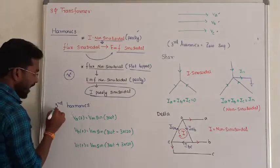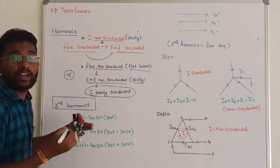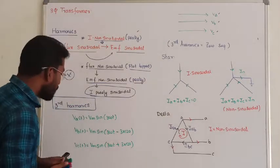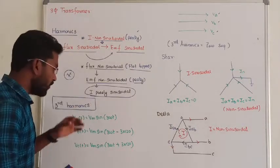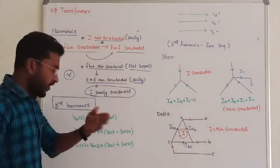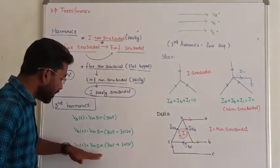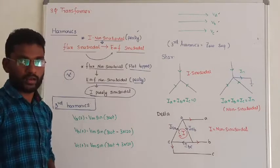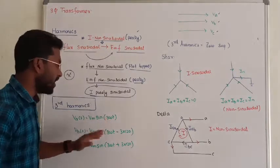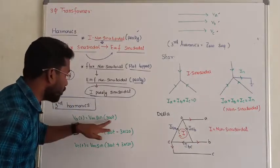Let us see the effect of harmonics in the three-phase system. I am considering only the effect of third harmonics because that is called the dominant harmonic. For the three phases: Phase A = Vm sin(ωt), Phase B = Vm sin(ωt − 120°), Phase C = Vm sin(ωt + 120°). Now making the third harmonic — frequency and phase angle are multiplied by 3.